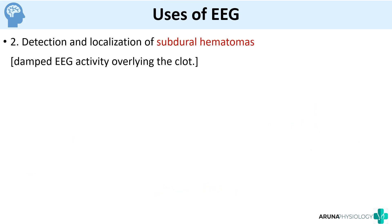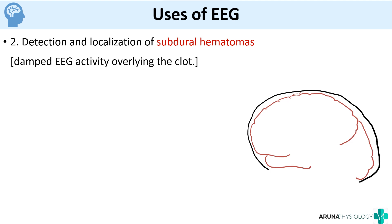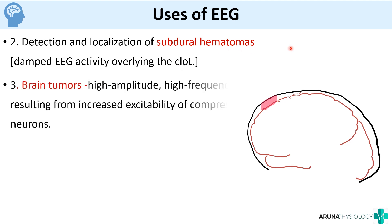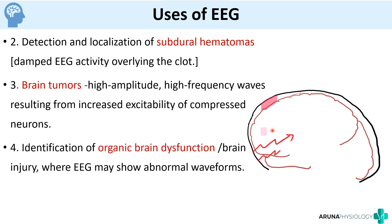You can also use EEG for detection or localization of subdural hematoma. If you have a clot, the EEG produced overlying the clot will be damped — that is how you can identify a subdural hematoma. You can also identify brain tumors: in that area the neurons are compressed, and such neurons will produce high amplitude, high frequency waves. You can also identify organic brain dysfunction like a brain injury, which will show abnormal waveforms on EEG.